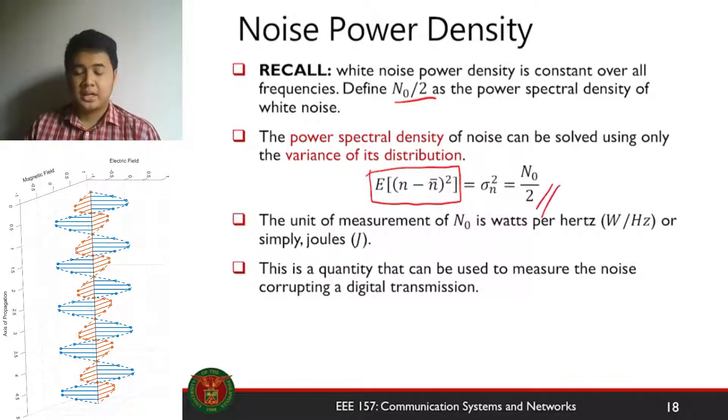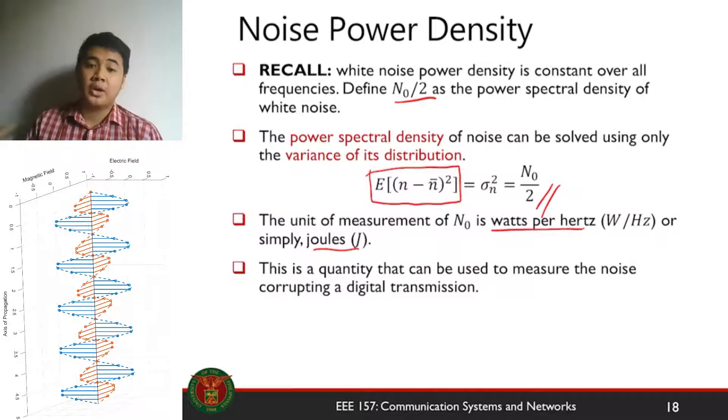If we get the variance of the distribution, we get the power spectral density. Therefore, we get the expression sigma n squared is equal to N0 over 2, which is measured in watts per hertz or quite simply joules, which is a measure of energy. So this quantity can be used to measure the noise, the amount of noise or the noise power corrupting a digital transmission.